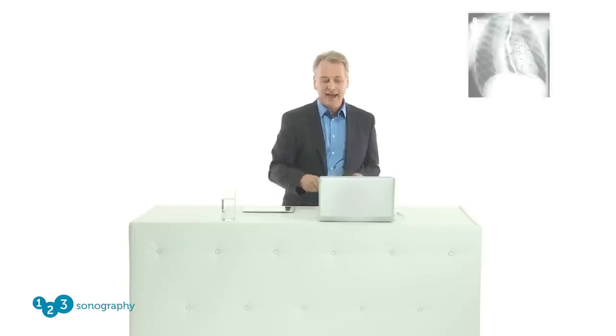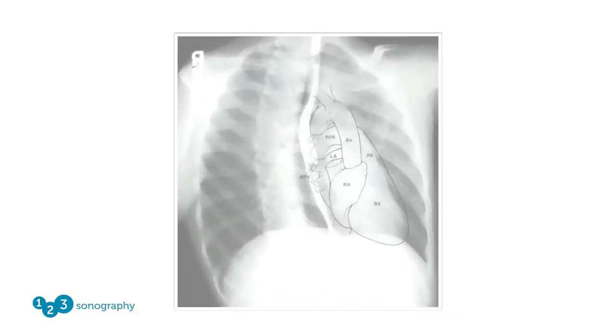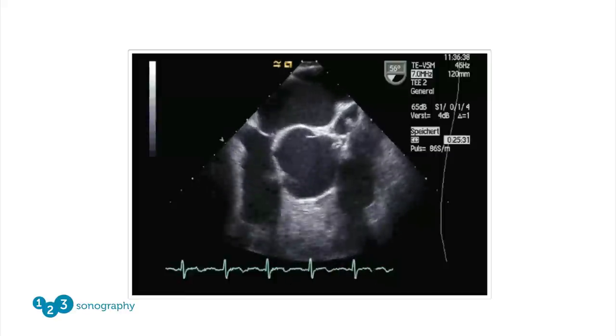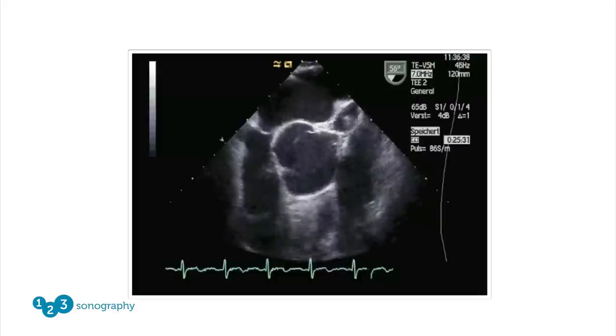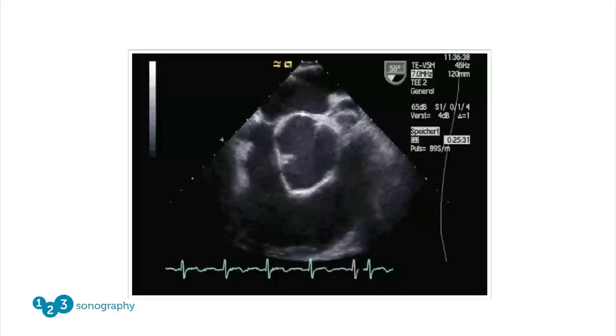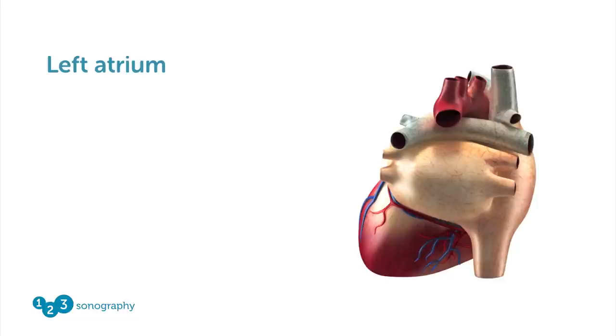The question remains: why do you want to swallow a probe to look at the heart? The answer is quite simple. Look at that chest x-ray and you will see that the esophagus is very close to many structures of the heart. This allows us to use very high imaging frequency to provide very high resolution images. However, this is not true for all structures of the heart — only for those which lie very close to the esophagus.